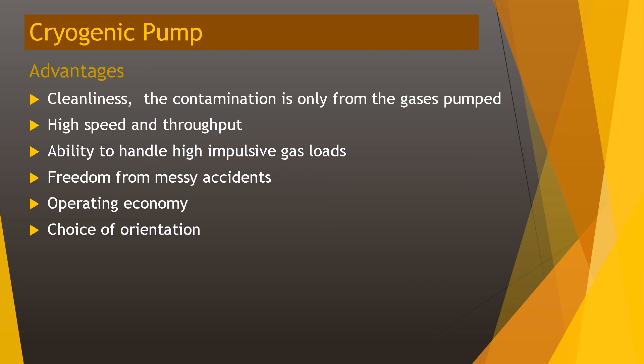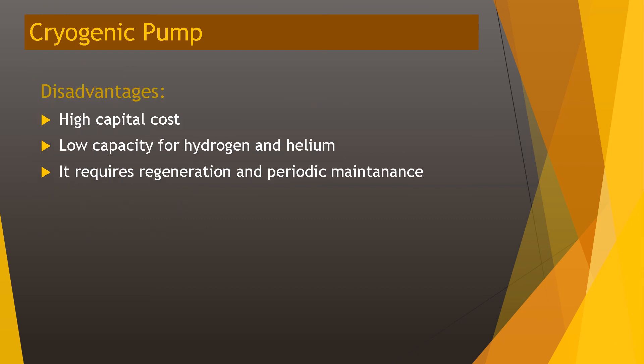Advantages of a cryogenic pump include: cleanliness — contamination is only from the gases pumped; high speed and throughput; ability to handle high impulsive gas loads; freedom from messy accidents; operating economy; and choice of orientation. Disadvantages include: high capital cost; low capacity for hydrogen and helium; and it requires regeneration and periodic maintenance.